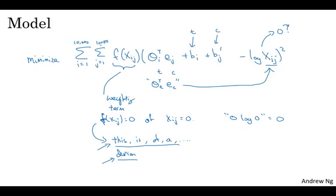Finally, one thing about this algorithm is that the roles of theta and e are now completely symmetric. Theta i and ej are symmetric. If you look at the math, they play pretty much the same role and you could reverse them or swap them around and end up with the same optimization objective. One way to train the algorithm is to initialize theta and e both uniformly at random, run gradient descent to minimize this objective, and when you're done, for every word, take the average. For a given word w, you can have e final equal to the embedding that was trained through gradient descent plus theta trained through gradient descent divided by two, because theta and e in this formulation play symmetric roles unlike earlier models where theta and e played different roles and couldn't be averaged like that.